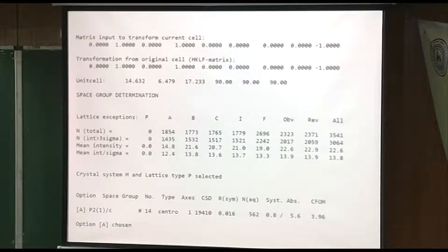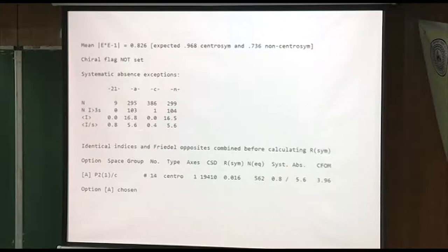After the transformation, it interchanged A and B to 14, 6, 17. Now this angle is no longer exactly 90, but it's probably within 1% of 90. However, as you go down to the selecting of the space group, it selected it easily as P21 over C. Here the 21 is along B, and the C glide is along B also.